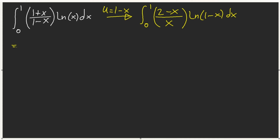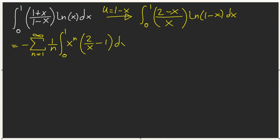If we go ahead and dive in, we know the Taylor series for ln(1-x): it's negative the sum from n=1 of (1/n) x^n. To simplify, we'll put (2/x - 1) dx.